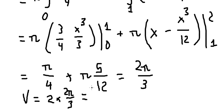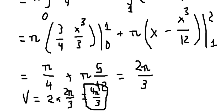Since we found the volume of only half the region and the full region is symmetric, we multiply by 2, giving a final answer of 4π/3. That is the final answer. Thank you for watching.